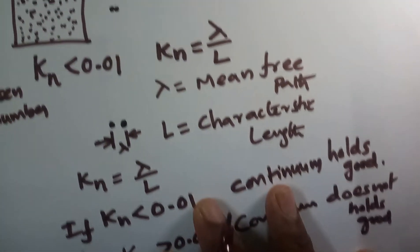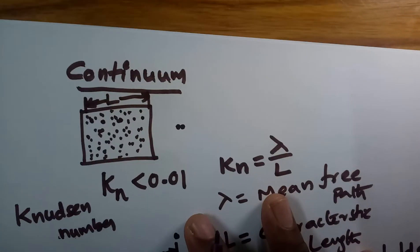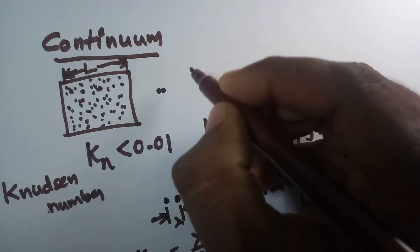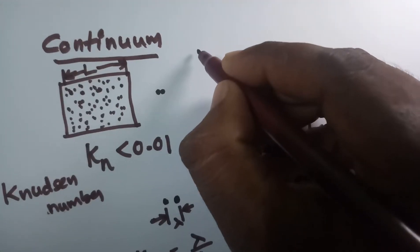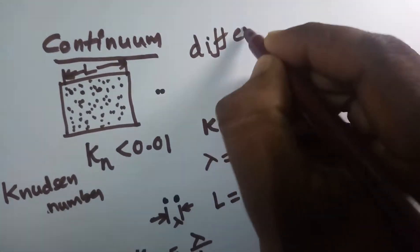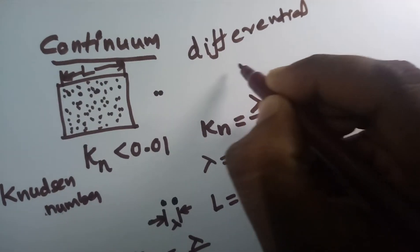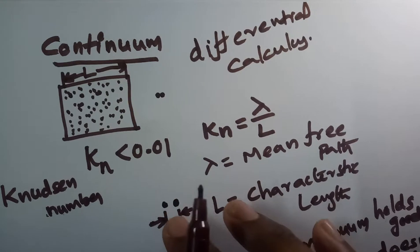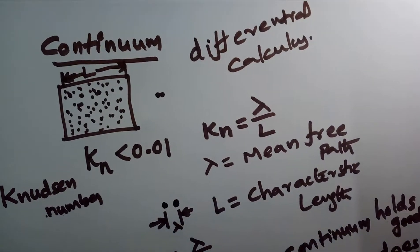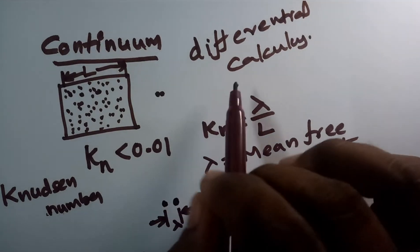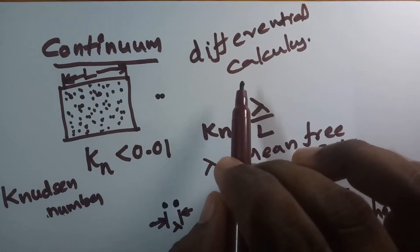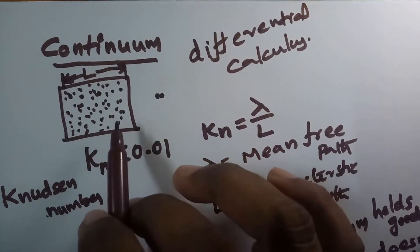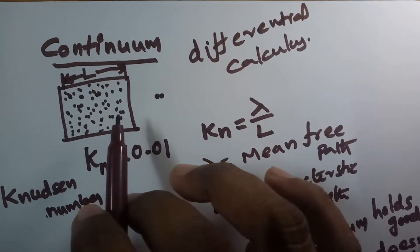Why must the fluid system have a continuum? Because if you want to do mathematical analysis on any fluid system, you definitely have to use differential calculus. To use differential calculus, the system has to achieve continuum or the system must be continuous. Unless and otherwise, you cannot do differential calculus. If the system is continuous, then only you can do differential calculus. So even though the fluid doesn't achieve a continuous state, you have to assume it for solving the problem.